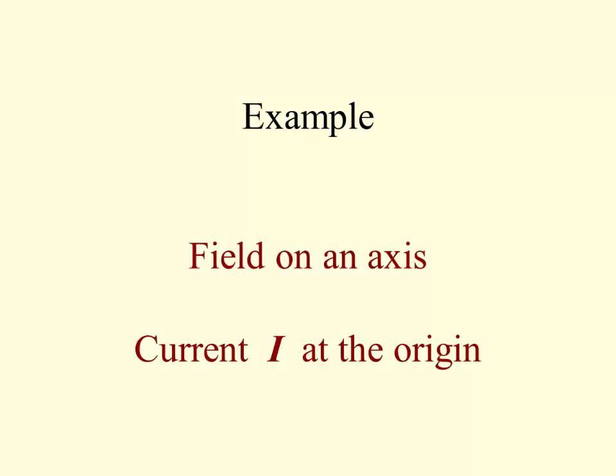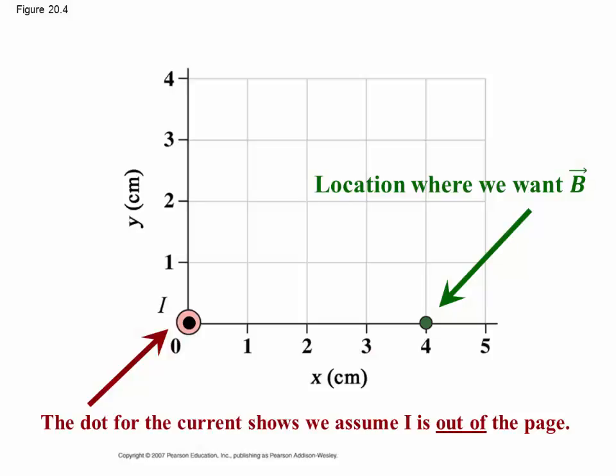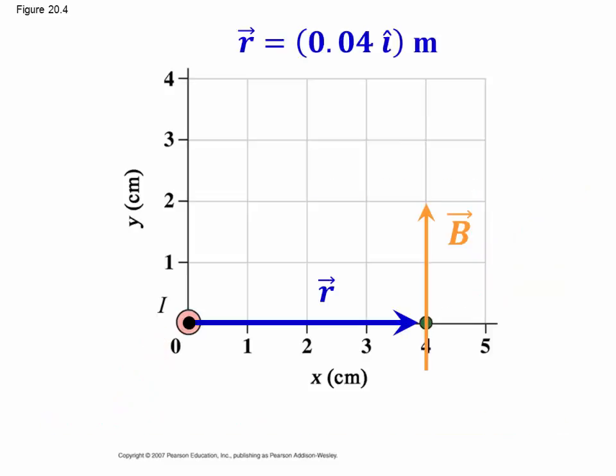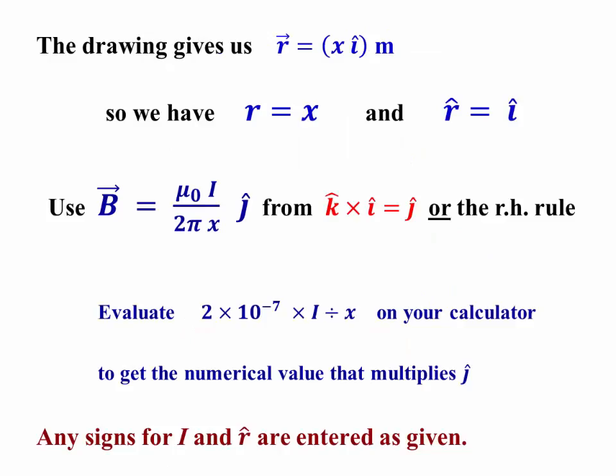Okay, first, an example where the field is on an axis. I show a dot for the current indicating that my pictures are going to represent a current that is positive, that is coming out of the page. And we're going to want the field on the x axis. The r vector is just .04 i hat. And here in orange, I show a pre-assessment of what the field is going to be. The field is going to be perpendicular to r vector in a right-handed sense. It's in the plus j hat direction because that is the direction that a counterclockwise rotation around a circle would flow. But we're going to get that from using the vectors.